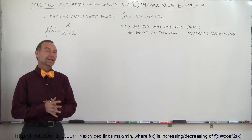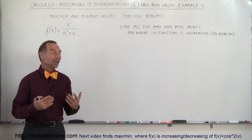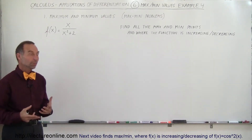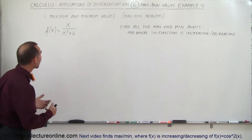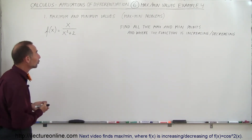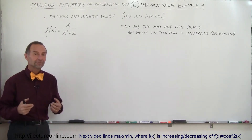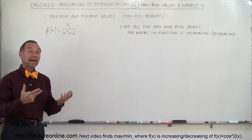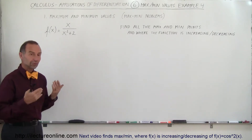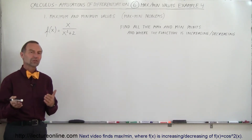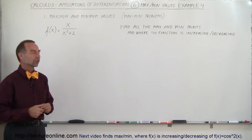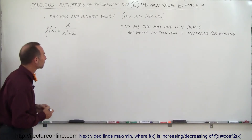Welcome to Electronline. We have an example here that's a little bit different from the norm. We have f of x equals x divided by x squared plus 2, and we're trying to find the maximum values and also find where the function is increasing and decreasing, which gives us an idea of what the function will look like.